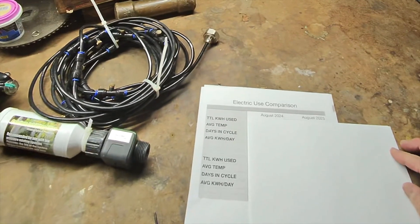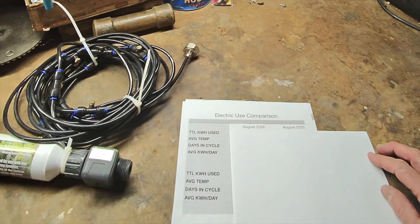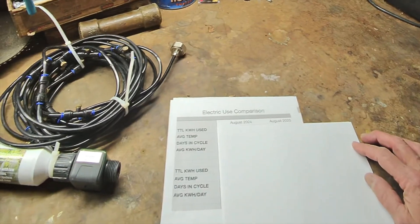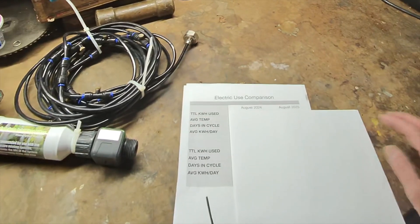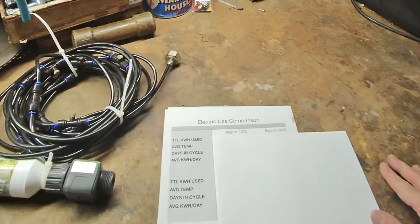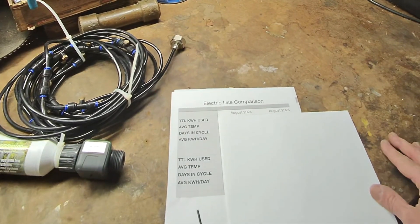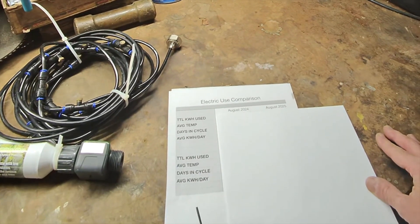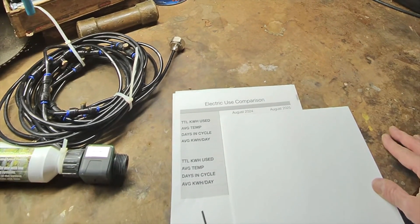All right, here we are back in the shop and it is time to compare the actual numbers. You know, as you may recall, when we were setting this up, we were testing. And we would take a look at the power draw without the misting system on and the power draw with the misting system on and compare the numbers. And it looked like we were getting about an eight to 10% reduction in power draw with the misting system on. So that gave us some hope.